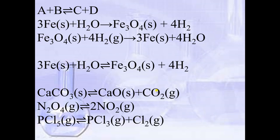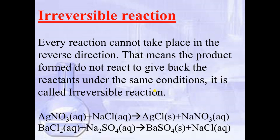Note: if one of the products escapes out or is removed from the reaction, the reaction becomes irreversible. In an irreversible reaction, the reaction only takes place in one direction and the products do not react to give back the reactants. For example, silver nitrate reacts with sodium chloride to give silver chloride and sodium nitrate — this is irreversible because AgCl does not react with NaNO₃ to give back AgNO₃ and NaCl. For irreversible reactions, we use a single arrow sign. Similarly, barium chloride reacts with sodium sulfate to give barium sulfate and sodium chloride.